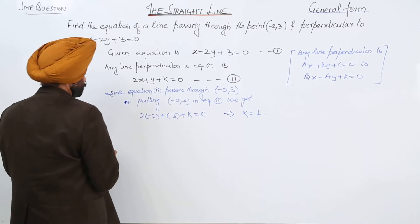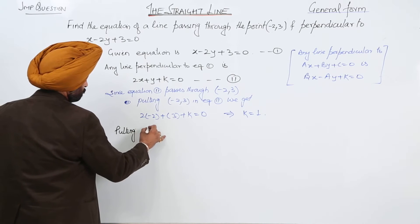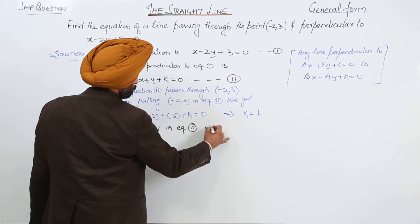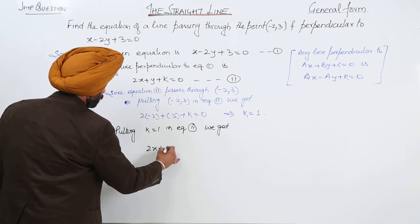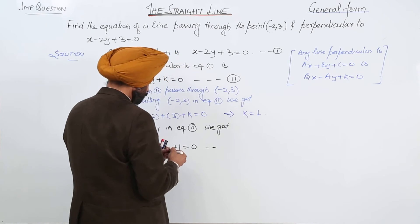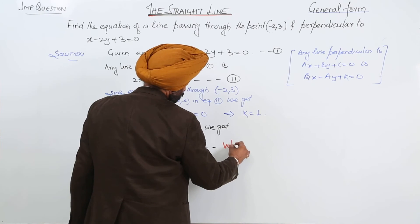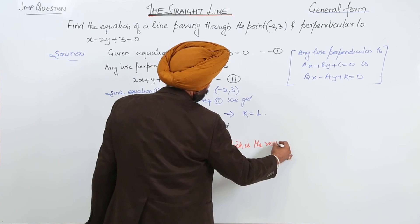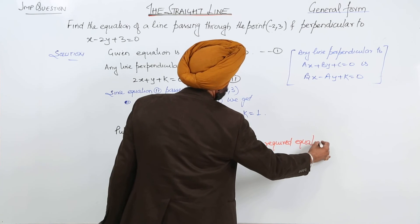Putting k is equal to 1 in equation 2, we get 2x plus y plus 1 is equal to 0, which is the required equation.